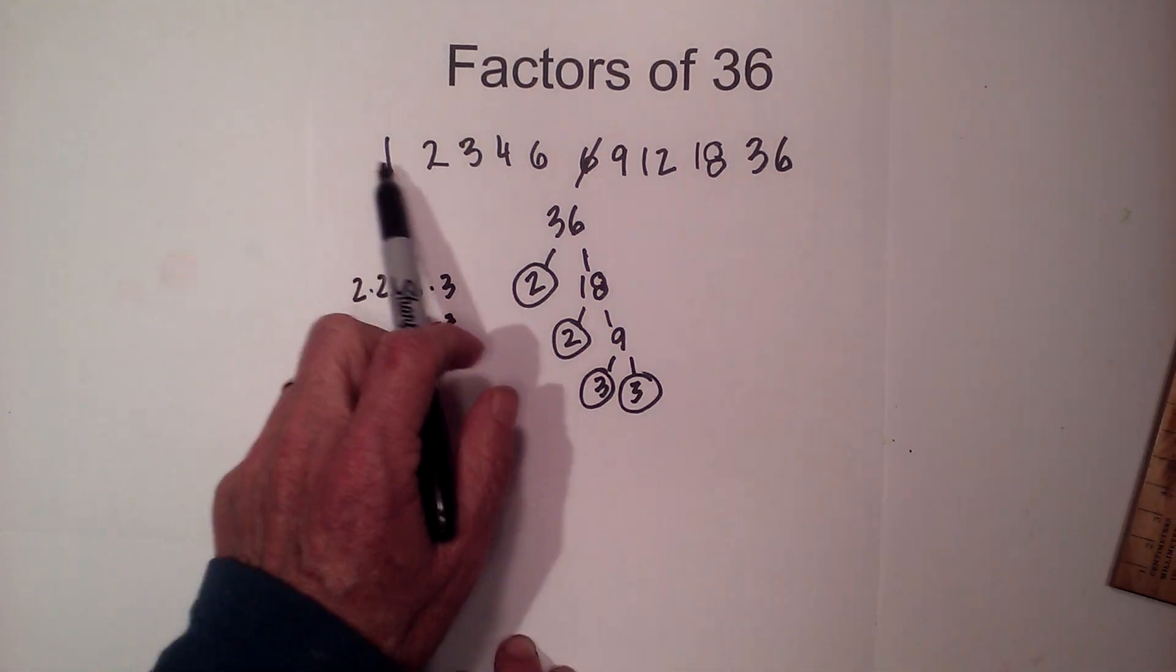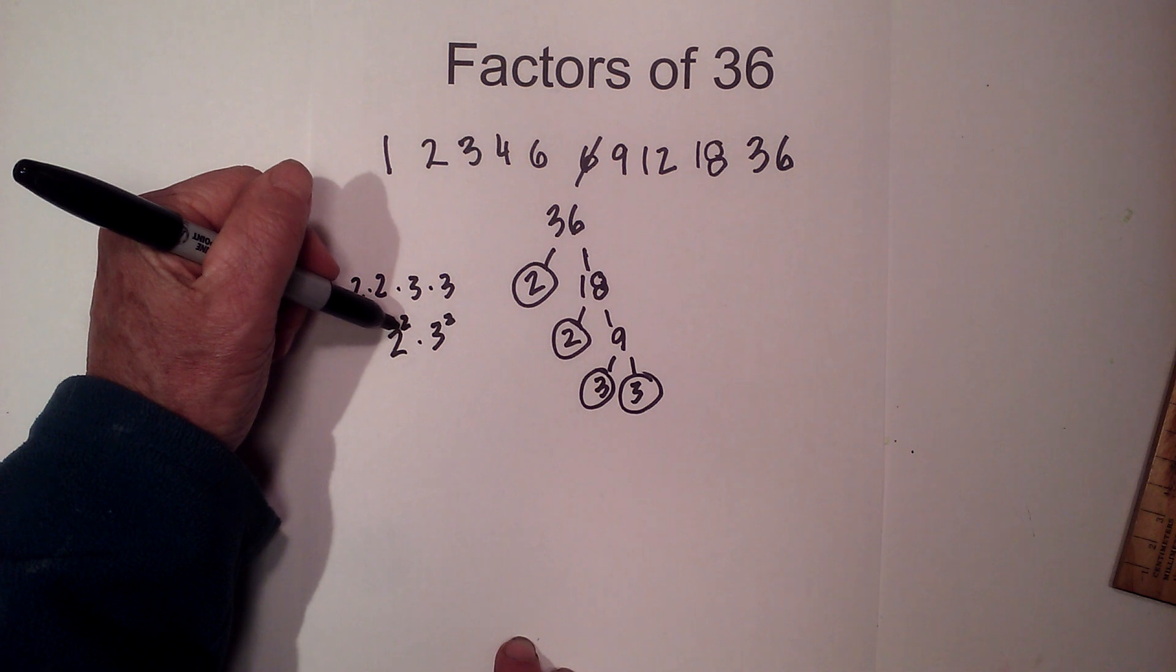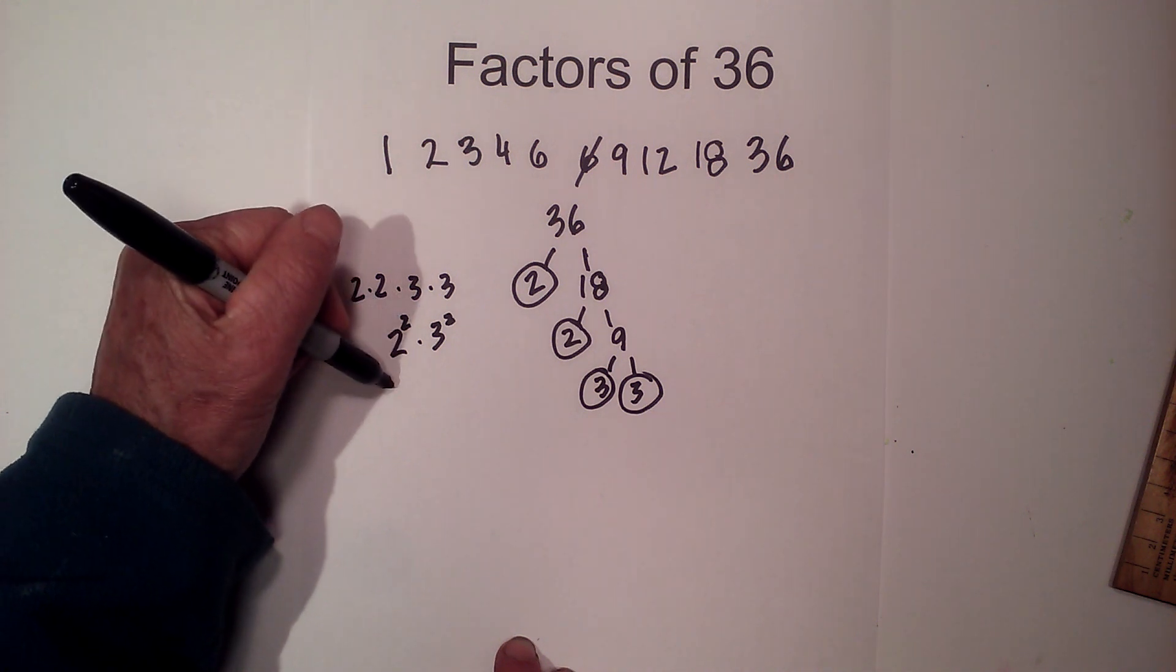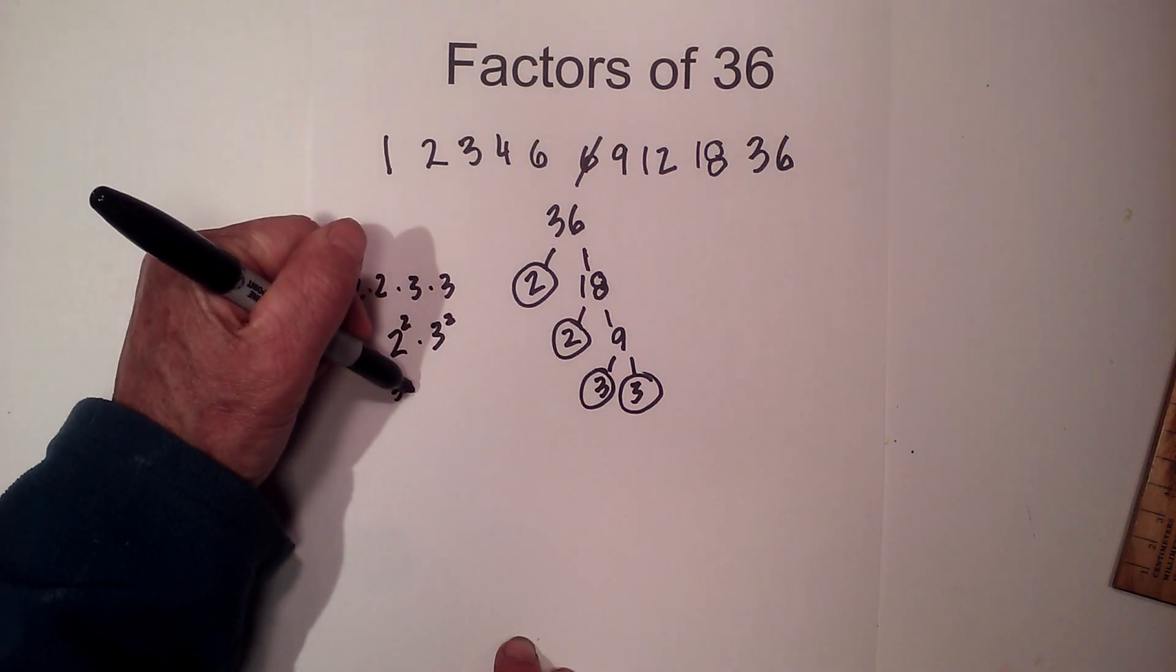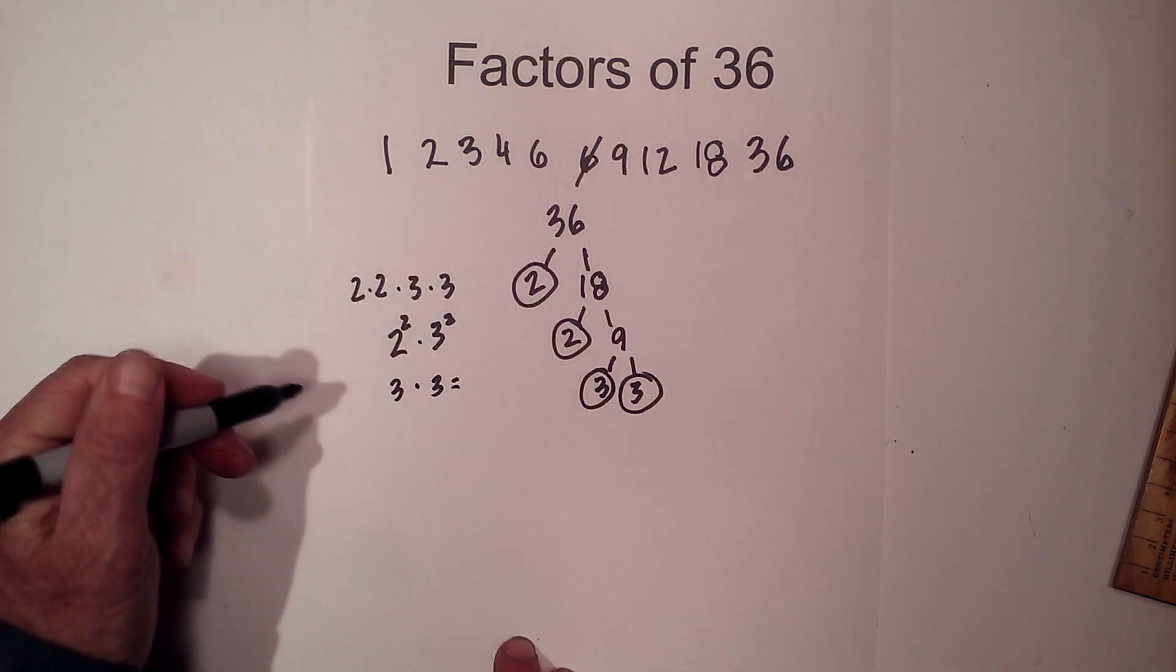Now a trick to see if we have all the factors is add 1 to each exponent 2 plus 1 is 3, 2 plus 1 is 3 and multiply those together and that should be how many factors 36 should have.